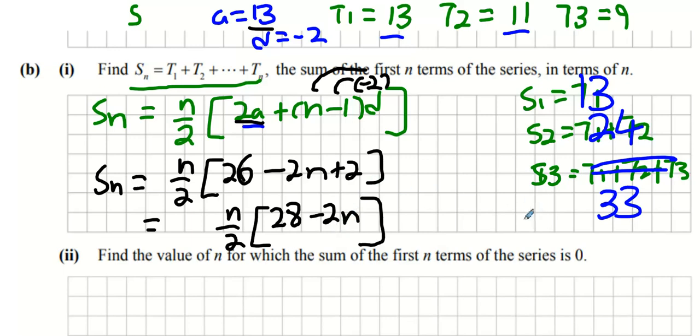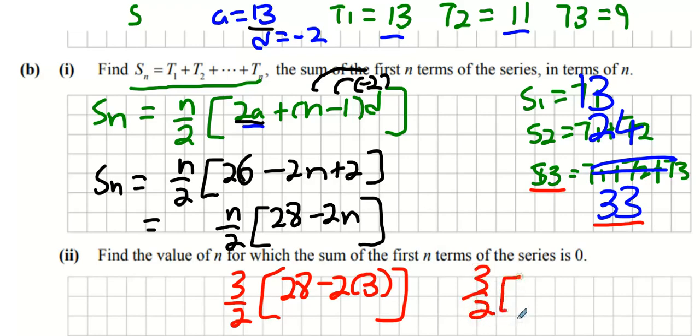If you want to check your answer as an example, you could substitute in S3 and find out if the answer is 33 or not. That'd be 3 over 2 times 28 minus 2 times 3, and then what you find out is 28 minus 6 is 22, 3 over 2 times 22, and if you multiply that out you'll get 33, hence you know your formula is correct.